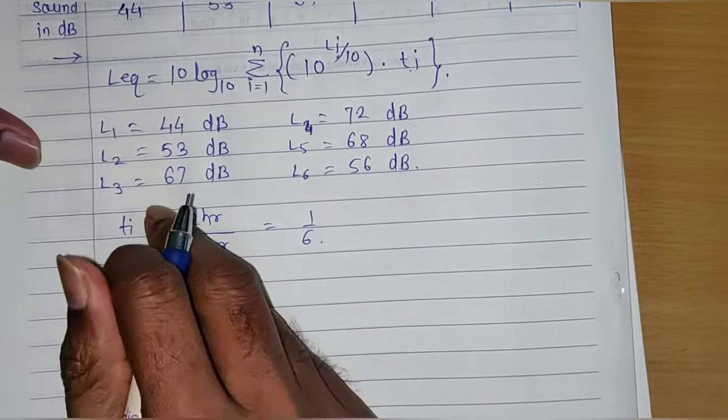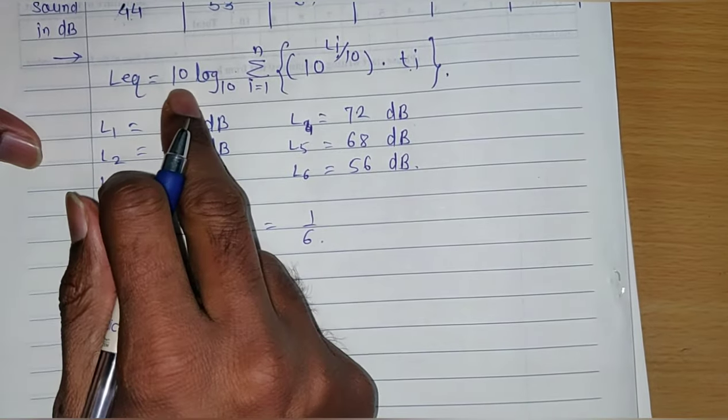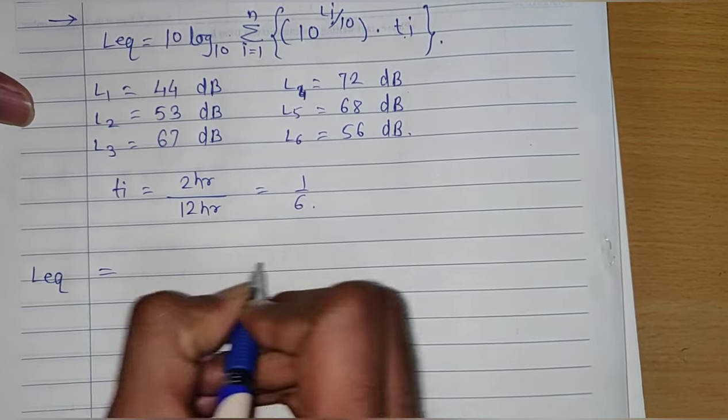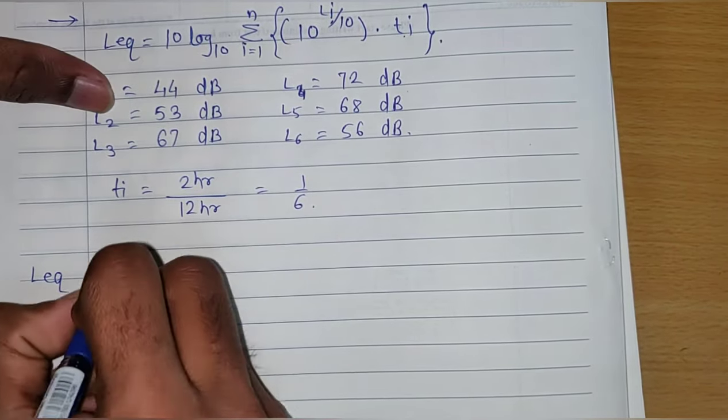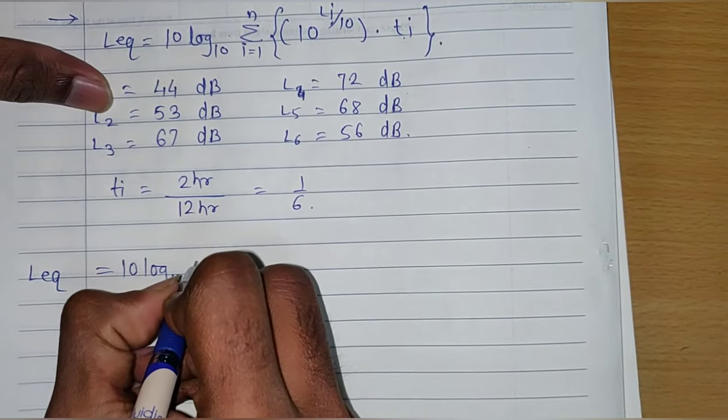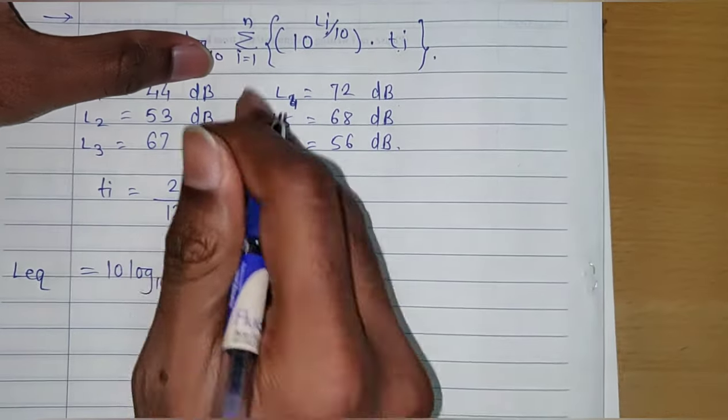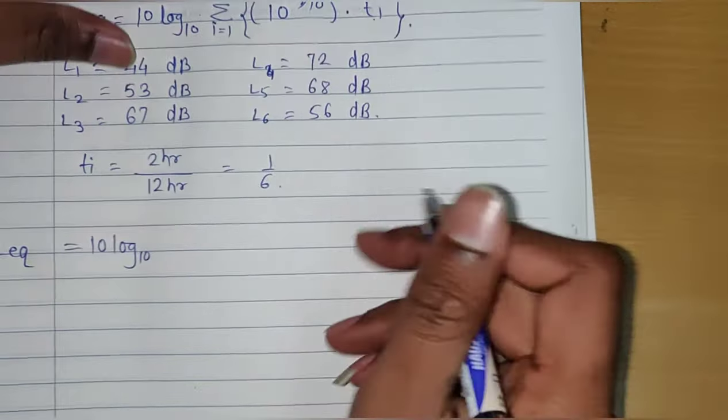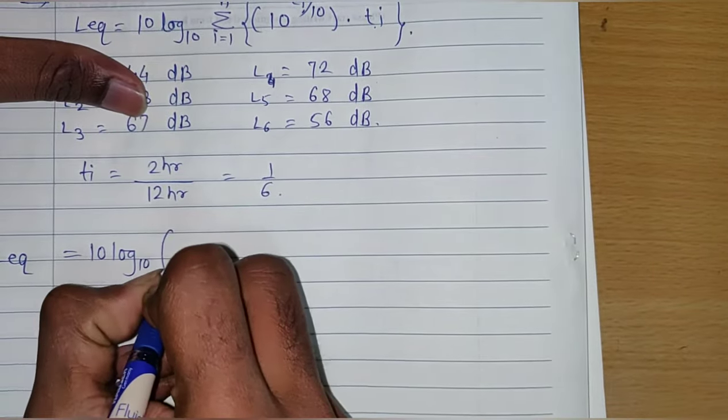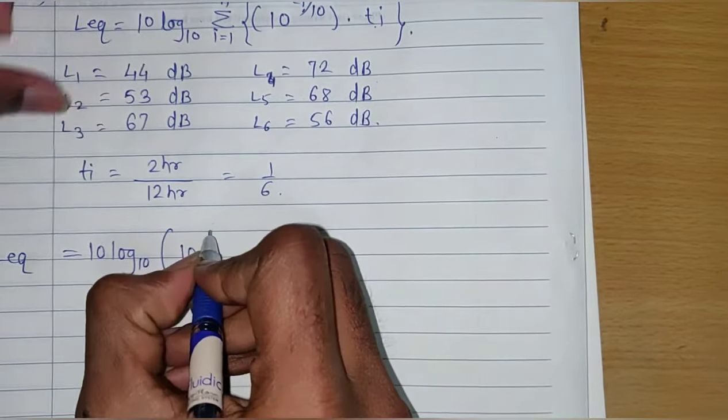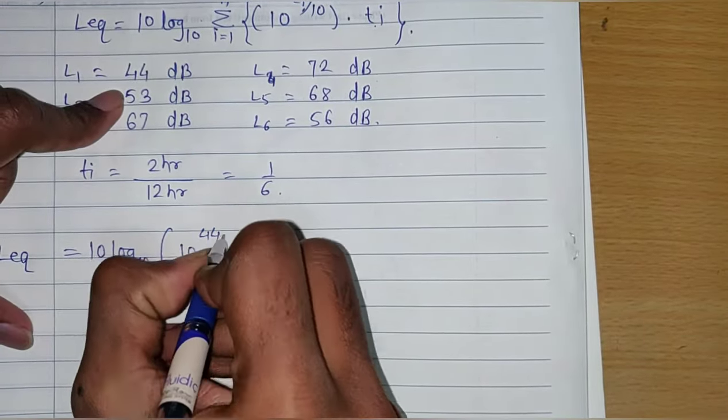Let's put all these values in the above equation to calculate L_equivalent. 10 log base 10, summation - I will expand this equation so the summation sign will be removed. In bracket: 10 raised to the power 44 by 10 plus 10 raised to the power 53 by 10 plus 10 raised to the power 67 by 10